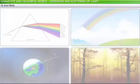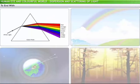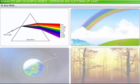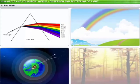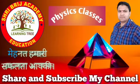This brings us to the end of this lesson on dispersion and the scattering of light. In this lesson, you have learned about refraction and dispersion of light through a triangular glass prism, formation of a rainbow, atmospheric refraction, and the scattering of light.